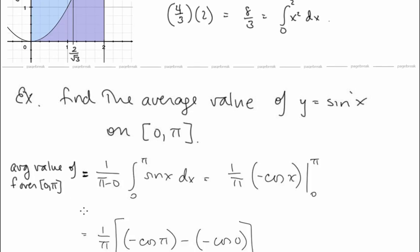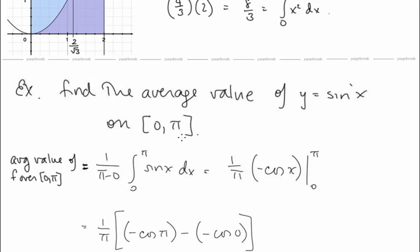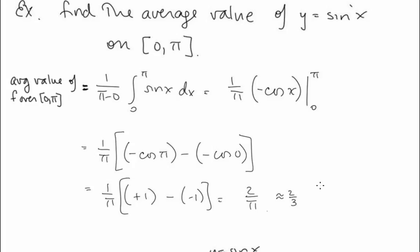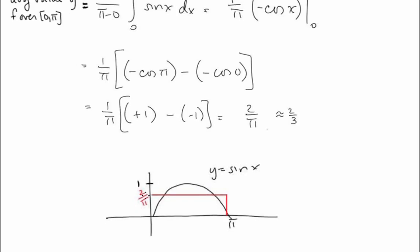Find the average value of y = sin(x) on [0, π]. We compute (1/(π−0)) ∫₀^π sin(x) dx. The antiderivative is −cos(x); plugging in bounds and subtracting gives 2/π as the average function value. Since π ≈ 3, this is approximately 2/3. The area of the rectangle given by this average value equals the area under the sine curve over this interval.